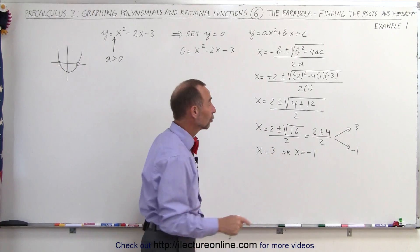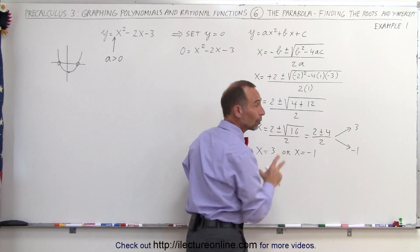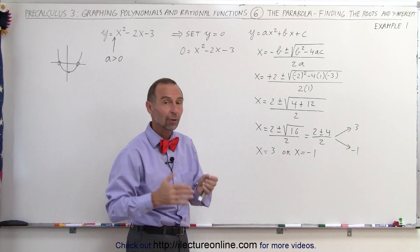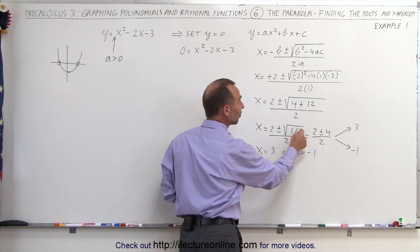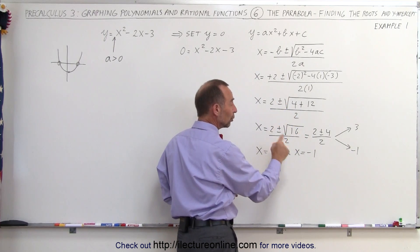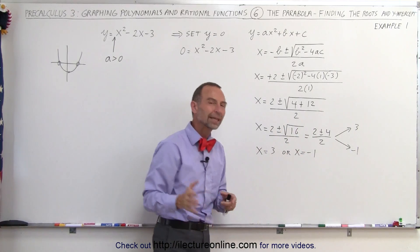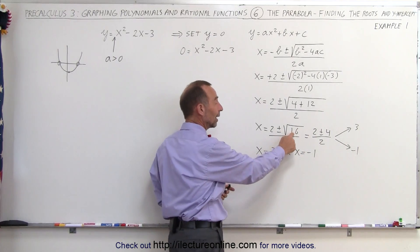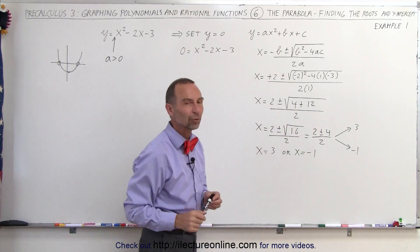Going back to our determinant — remember, the determinant always determines whether or not we have solutions, whether we have roots for the equation. If it's positive, we have two roots; if it's 0, we have one root; if it's less than 0, we have no real roots, only imaginary roots. In this case, the discriminant was 16, which is greater than 0, so we knew we would end up with two roots.